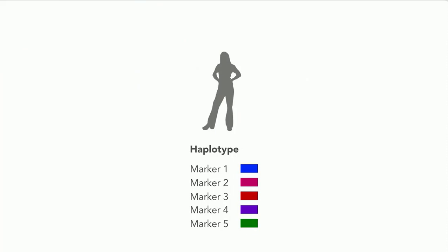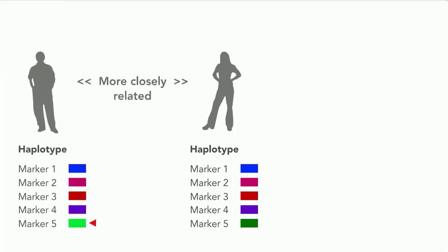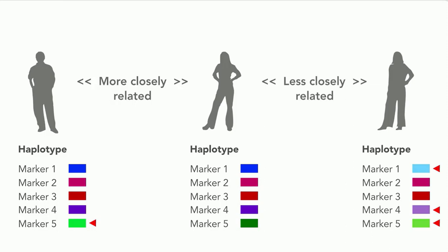People with similar haplotypes for a certain region of DNA are more closely related than those with different haplotypes.